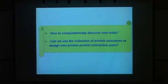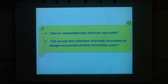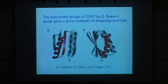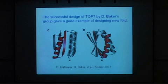Based on this, can we use the collection of existing protein structures — as well as new folds if we design many of them — to design new protein-protein interaction pairs? So let me start with the discovery of new folds. If we talk about protein design and new folds, there's one very famous example from David Baker's group. A few years ago, a protein was designed with a novel fold — the protein called Top7.